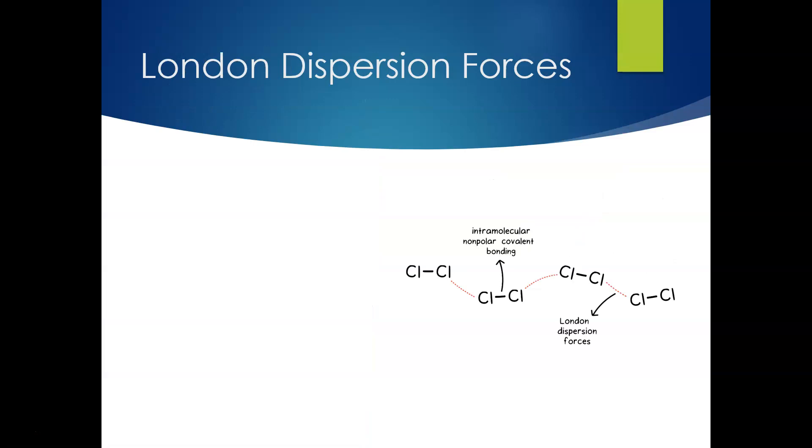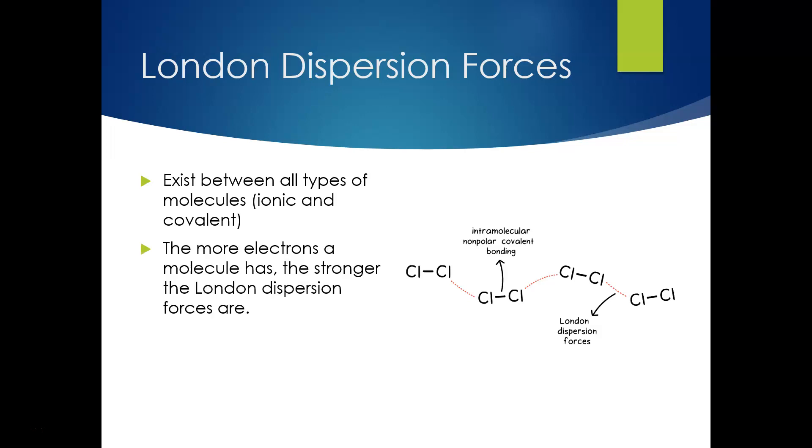Now, our last type of intermolecular force we want to talk about are London dispersion forces. And these exist between all types of molecules, both ionic and covalent. So essentially, the more electrons a molecule has, the stronger the London dispersion forces are. So the more electrons they have swirling around in there, the stronger they're going to be attracted to each other. So you can see all of these chlorines, even though they don't have a polarity and don't have a partial, they're just attracted to each other.